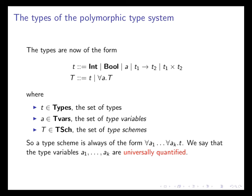A type scheme is always of the form for all A1 up to for all AK T, where little t is a type. And we say that the type variables A1 up to AK are universally quantified.